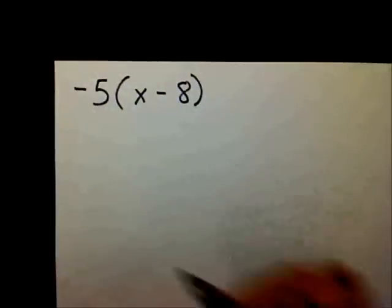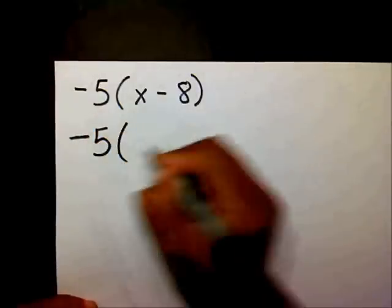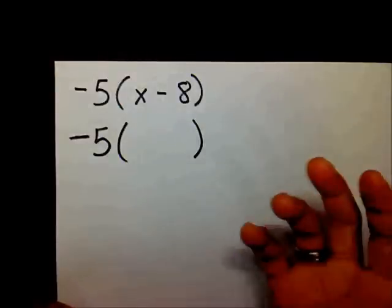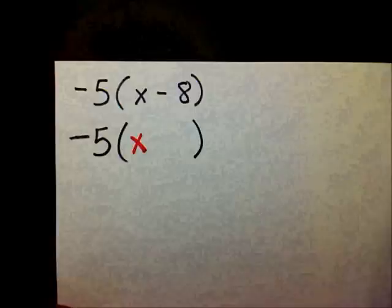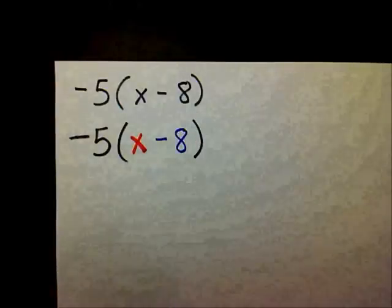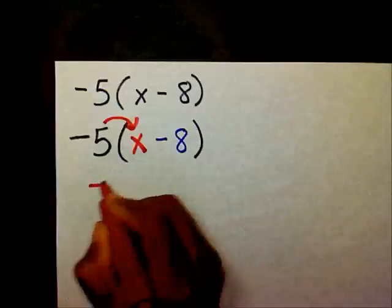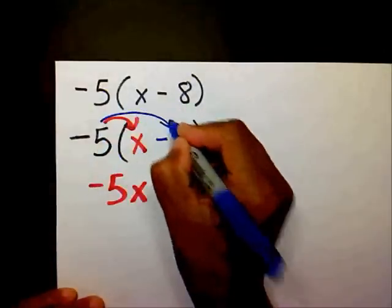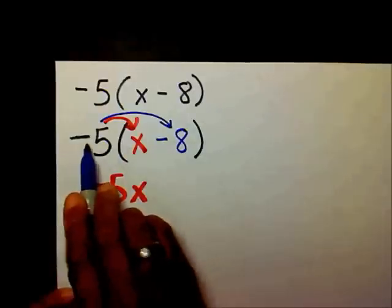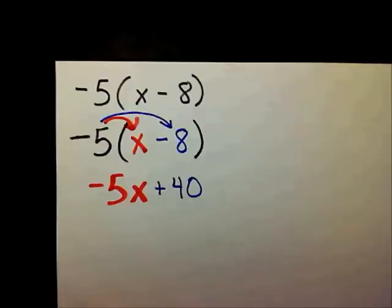Let's work another one. I like using colors because that allows you to see exactly what you're multiplying. We have negative 5 times x minus 8. I'm going to take negative 5 and multiply it times the x, which gives negative 5x. And I'm going to take the negative 5 and multiply it by negative 8 — negative 5 times negative 8 is positive 40. So the final answer is negative 5x plus 40.